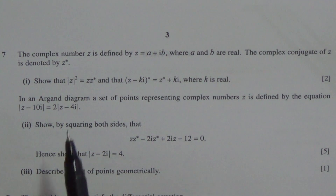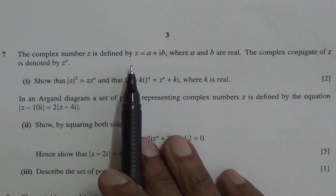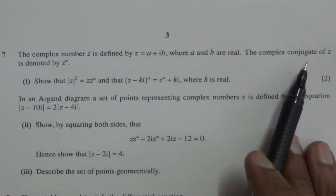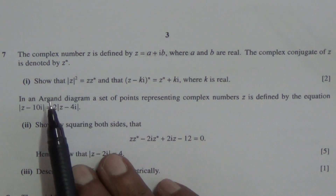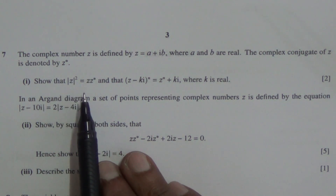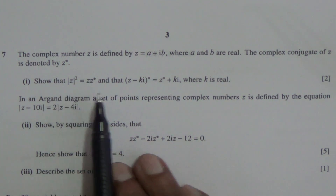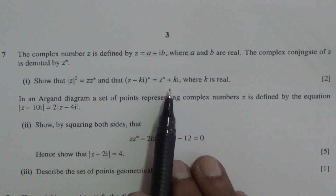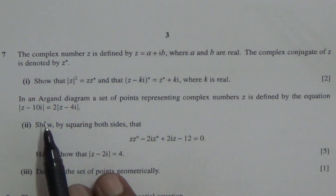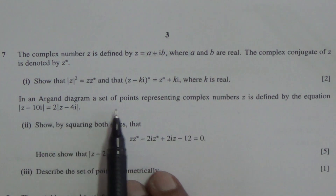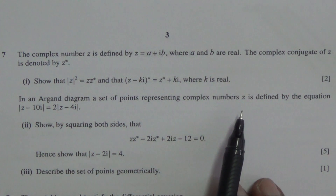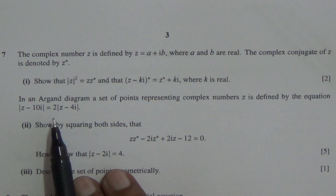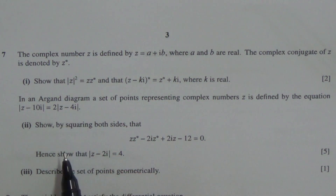For question number 7, the complex number z is defined by z equals a plus ib, where a and b are real. The complex conjugate of z is denoted by z star. Show that the modulus of z squared is equal to z times the conjugate of z, and that z minus ki conjugate is equal to the conjugate of z plus ki. In an Argand diagram, a set of points representing complex numbers z is defined by the equation modulus of z minus 10i equals 2 times modulus of z minus 4i.